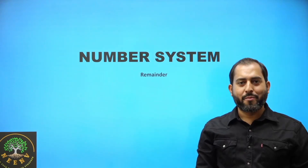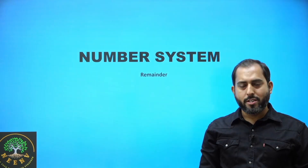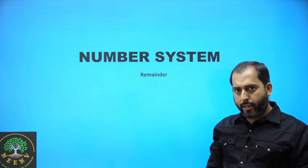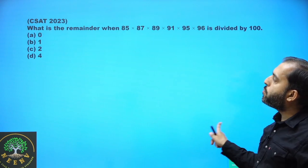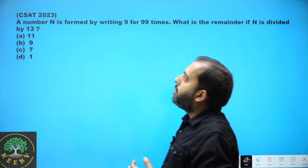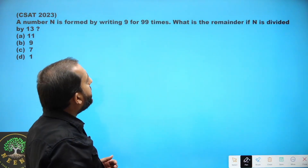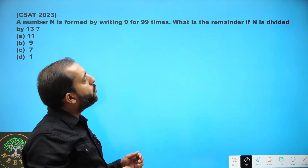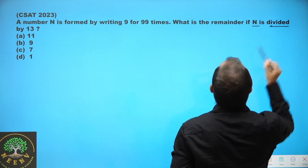Hello and welcome. We are discussing previous year questions of number system and our theme was remainder. We have discussed a few questions already. Let's move on to the next problem. This question says a number n is formed by writing 9, 99 times. What is the remainder if n is divided by 13?